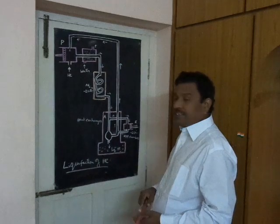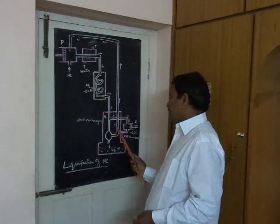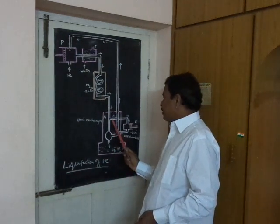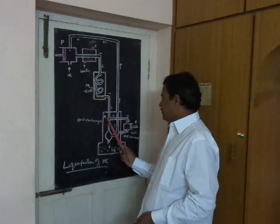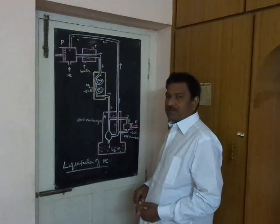In the heat exchanger, the gas is divided into two parts at the junction A.